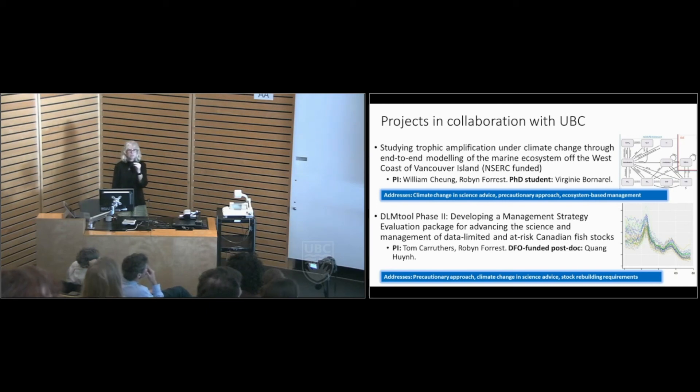We have a couple of projects in collaboration here with UBC. One is led by William Cheung with your student colleague, Virginie, studying trophic amplification under climate change through end-to-end modeling. So again, this is another type of ecosystem model. And then a project that I'm directly involved with, with Tom Carruthers, Quang and Adrian, DLM2 phase two, developing management strategy evaluation packages for advancing science and management data-limited and at-risk Canadian fish stocks. And this one's really important for us because this will allow us to get to some of the precautionary approach and sustainable fisheries framework needs that we have and which are going to be enshrined in the Fisheries Act for species for which we don't have a lot of data.